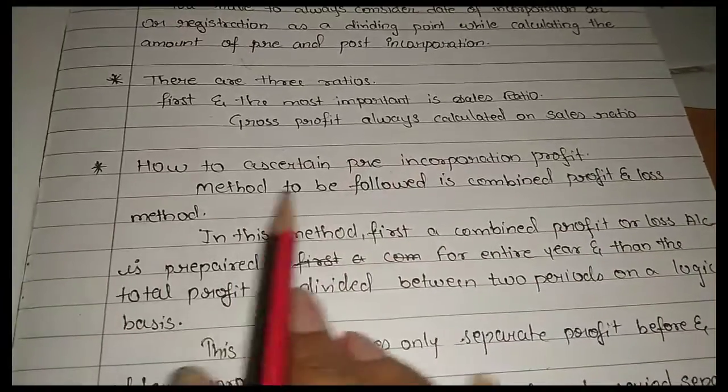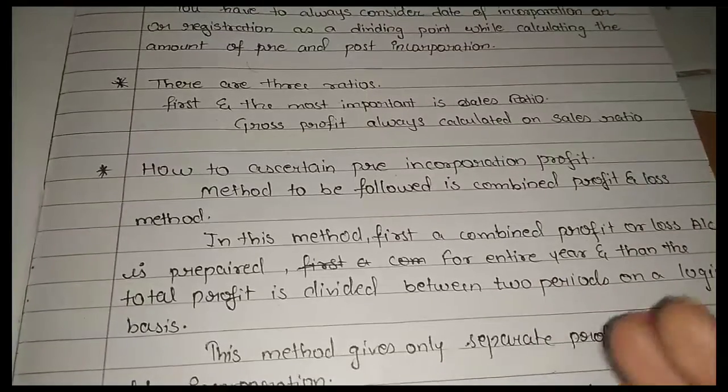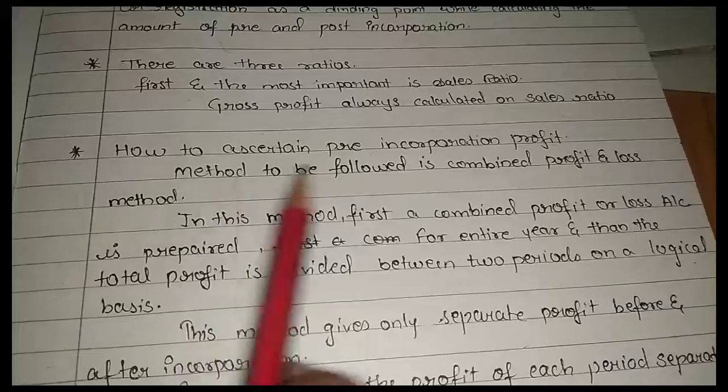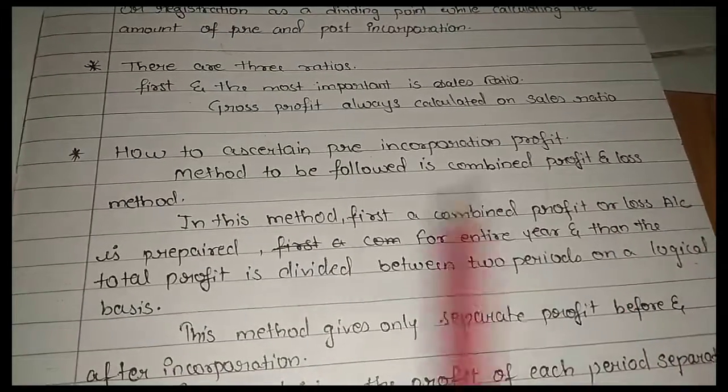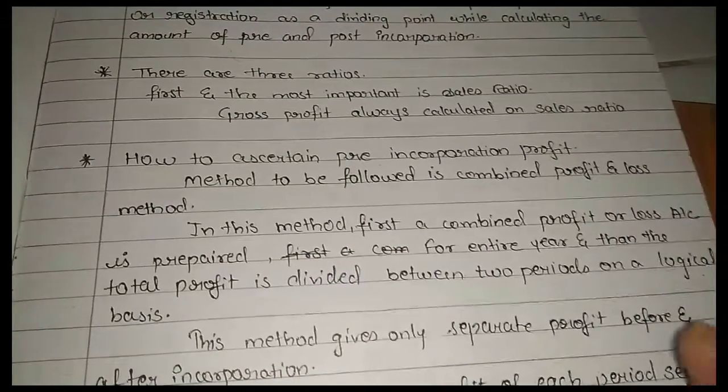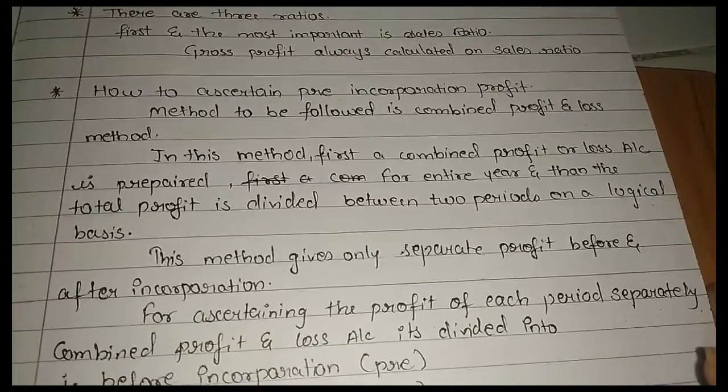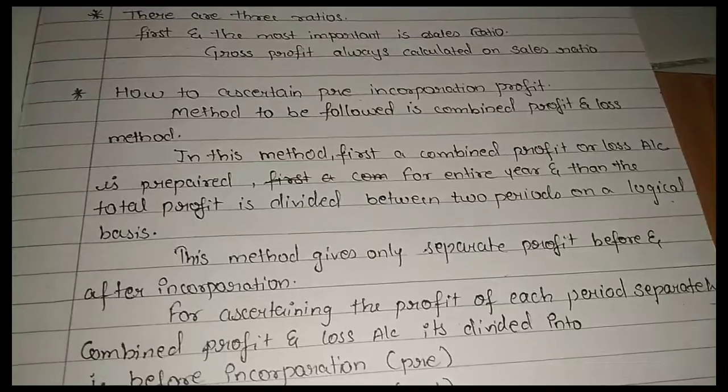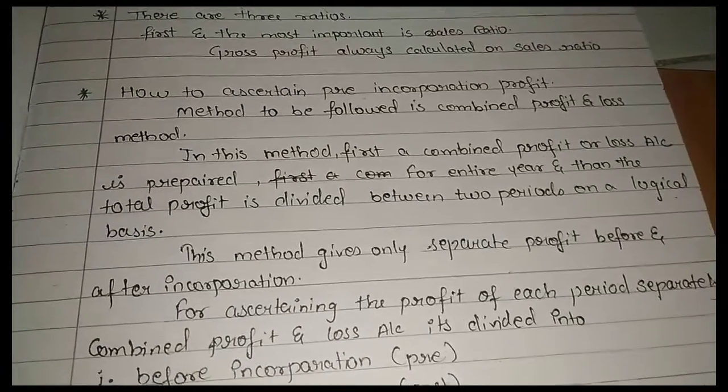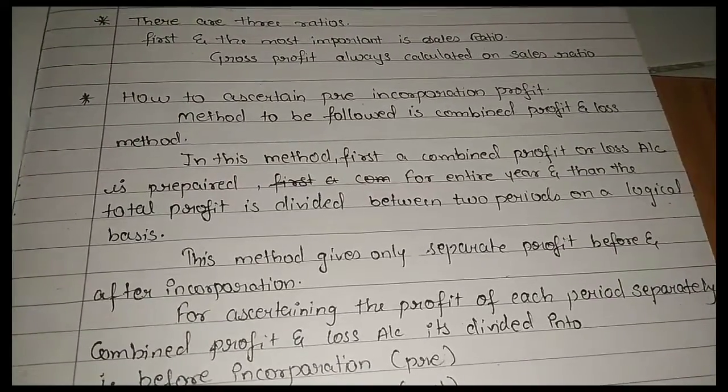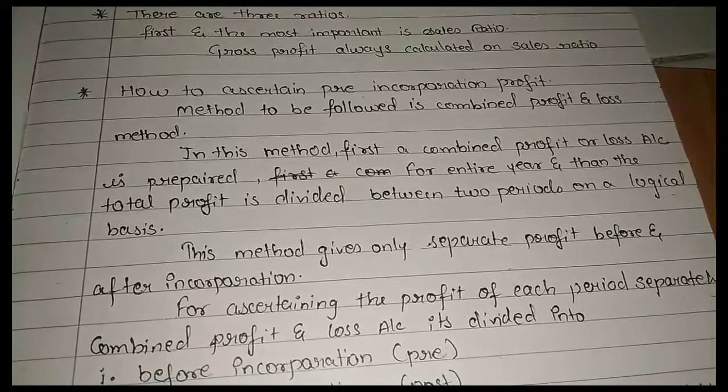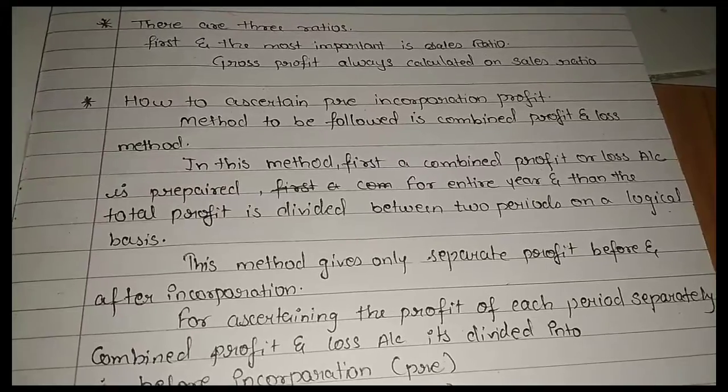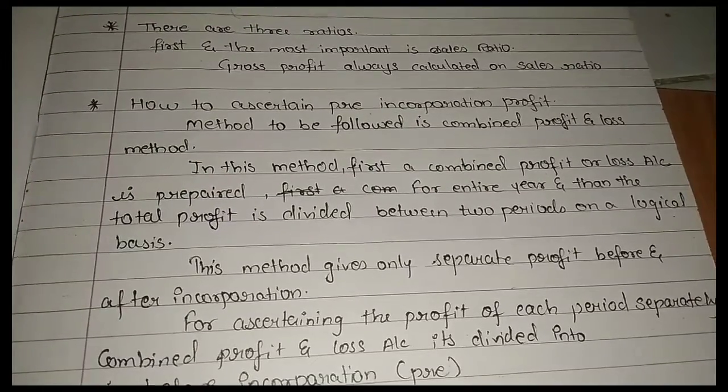But the most important is sales ratio. Here we have two ratios: time ratio and sales ratio. Now how to assert pre-incorporation and post-incorporation profit? The method to be followed is combined profit and loss.